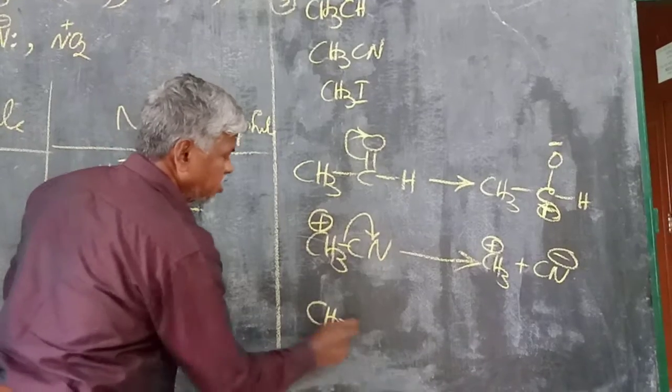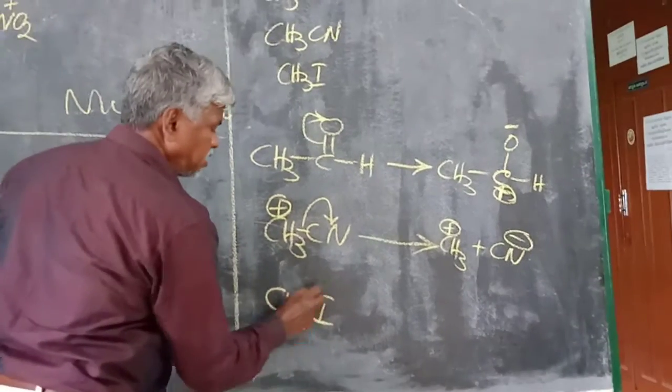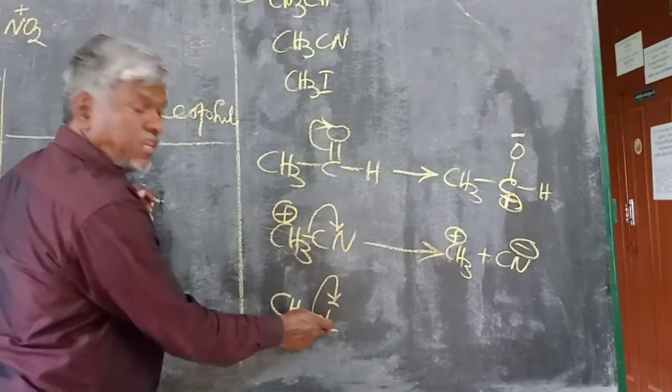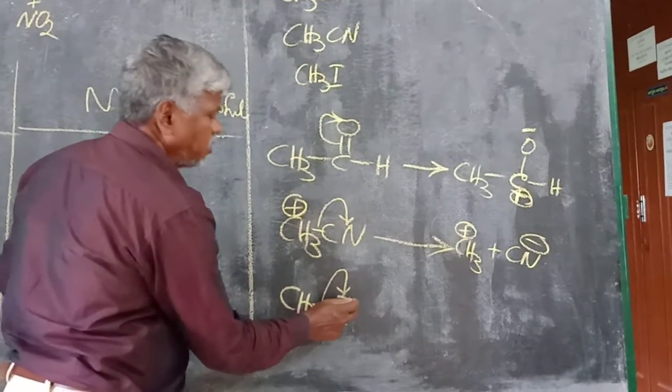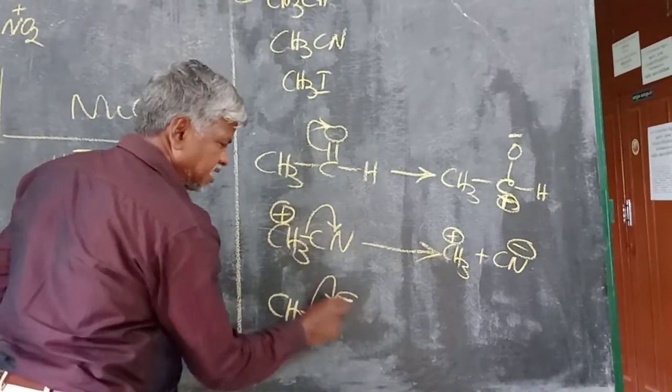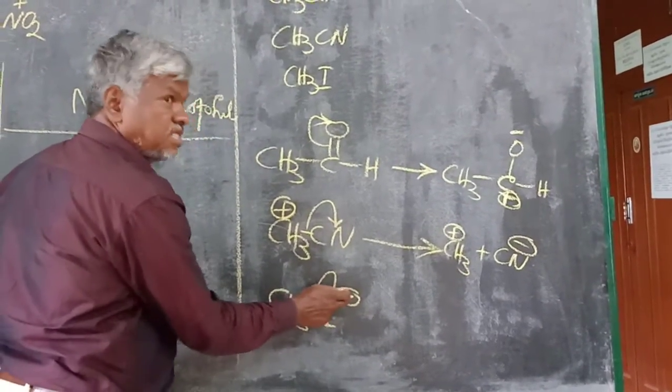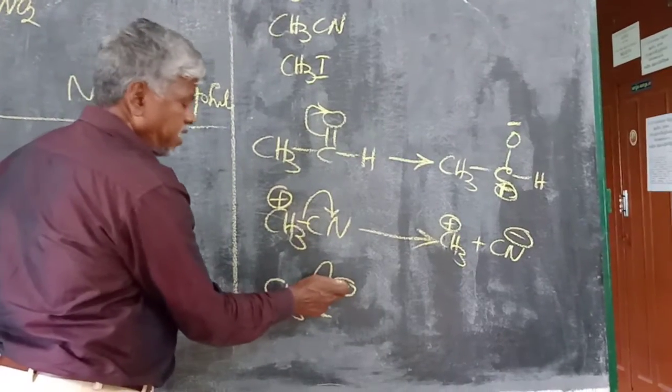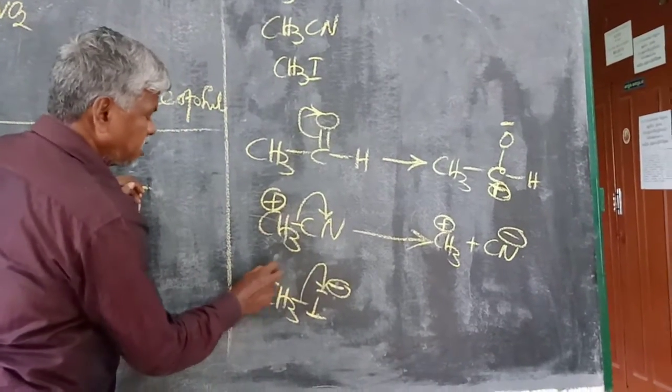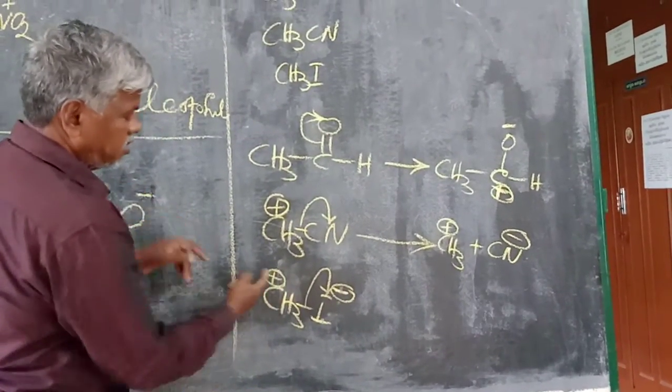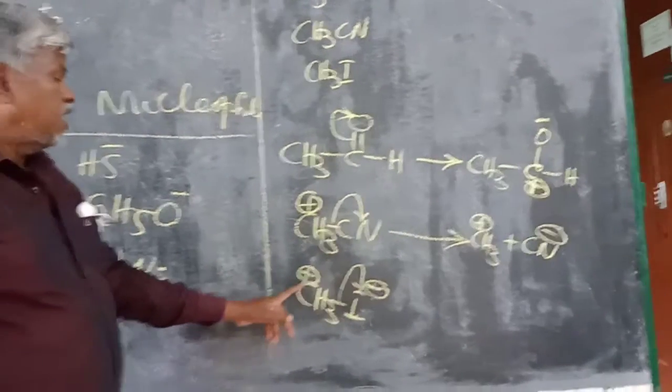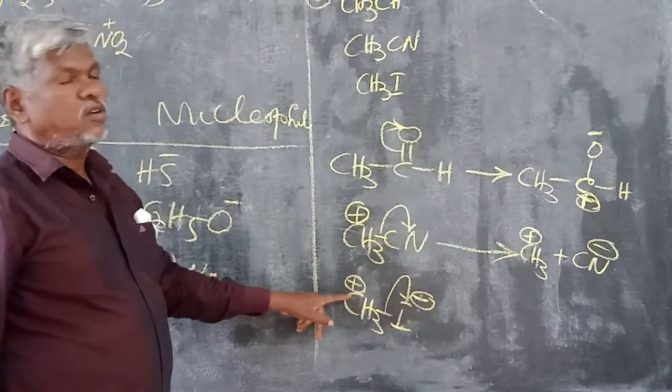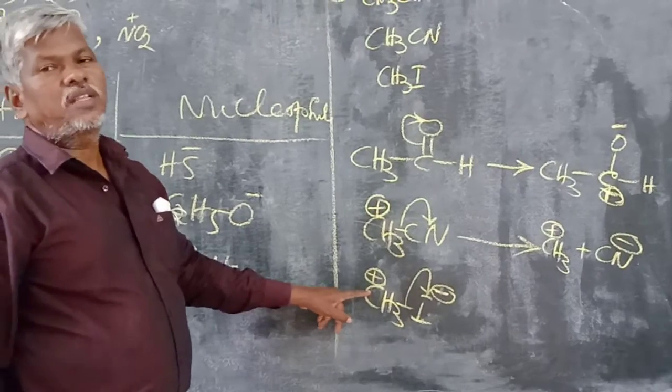In CH3I, iodine being an electronegative atom, it attracts the bonded electrons towards itself. As a result, this center gets a minus charge and this gets positive charge. Since it is positively charged, this is the electrophilic center for the reaction.